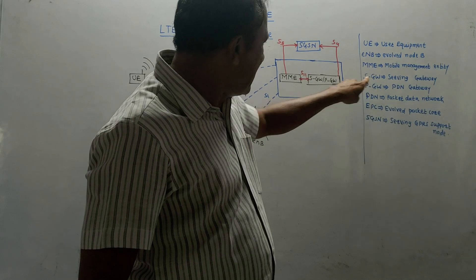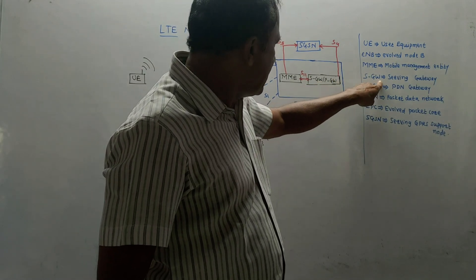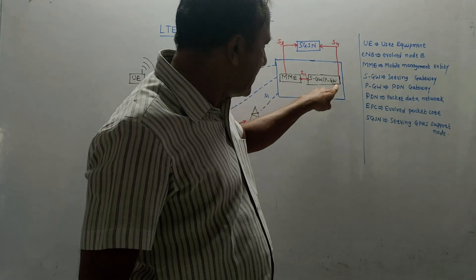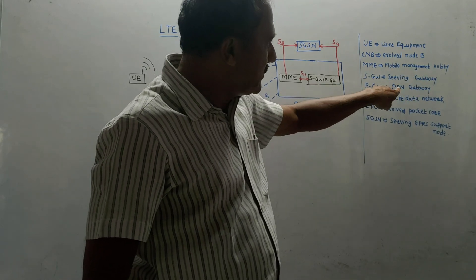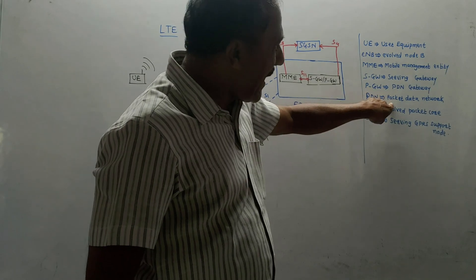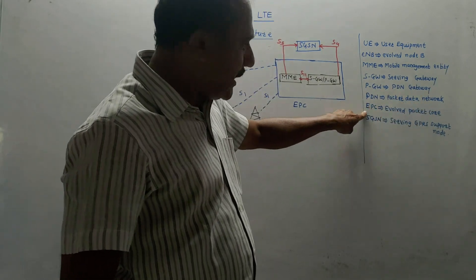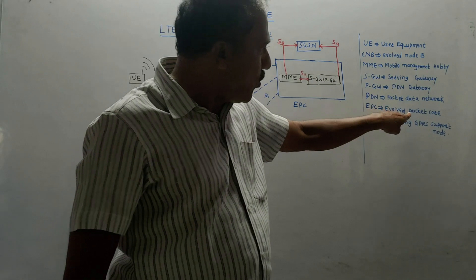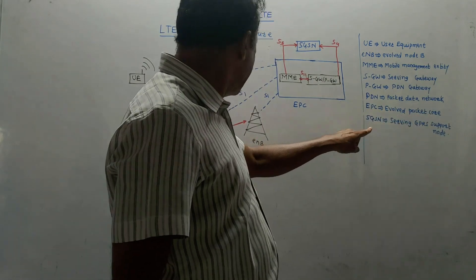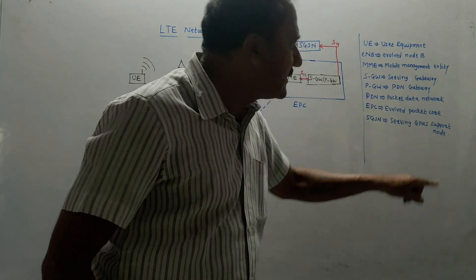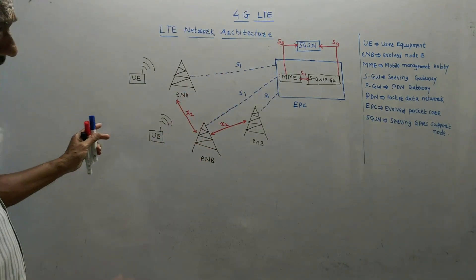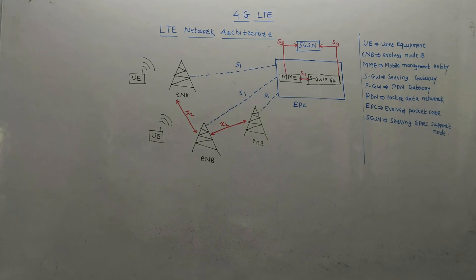Then SGW or PGW: SGW is serving gateway, PGW is PDN gateway. PDN is packet data network. EPC, as I told you, is evolved packet core, and SGSN is serving GPRS support node. Now we will discuss the meaning of each and every block in detail.